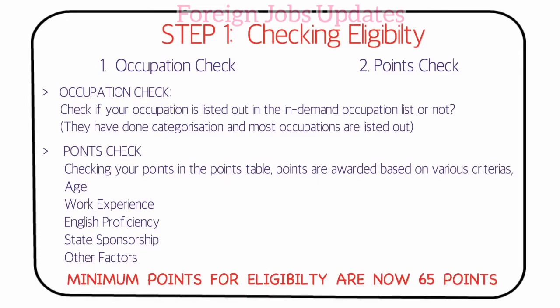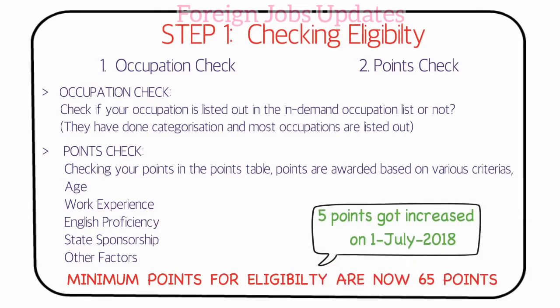State sponsors include Australian states such as Victoria, Queensland, and others. There are also other factors such as medical points. The minimum points required is 65. If you are 18 years old, you are eligible and benefit from Australia's points system.